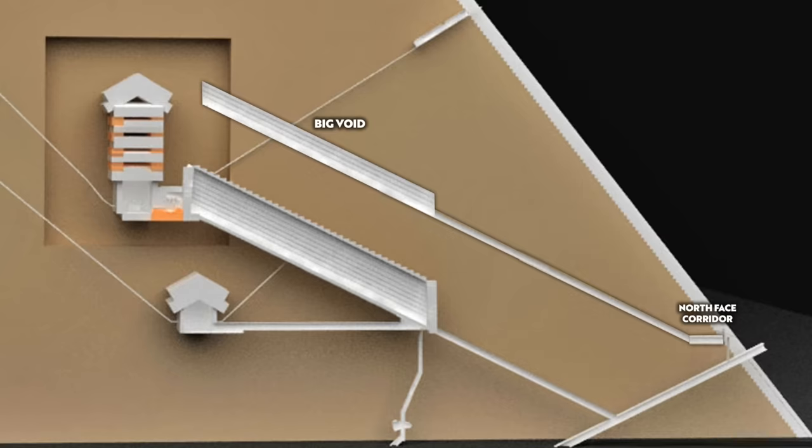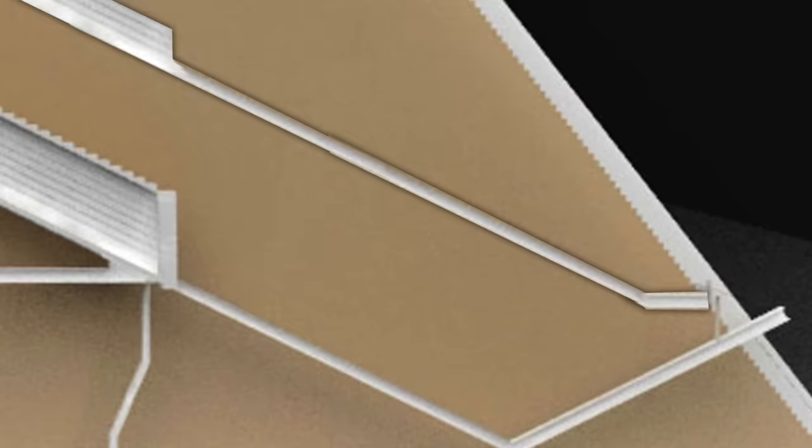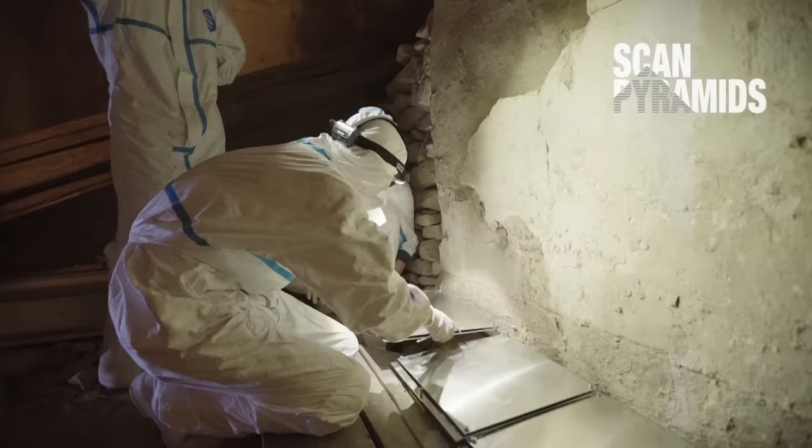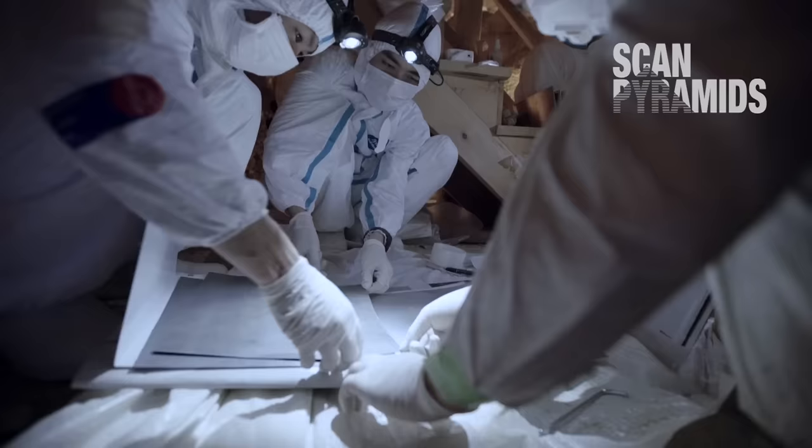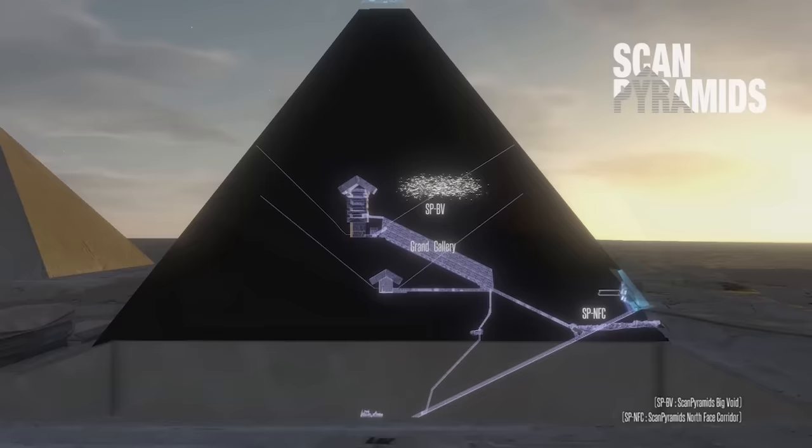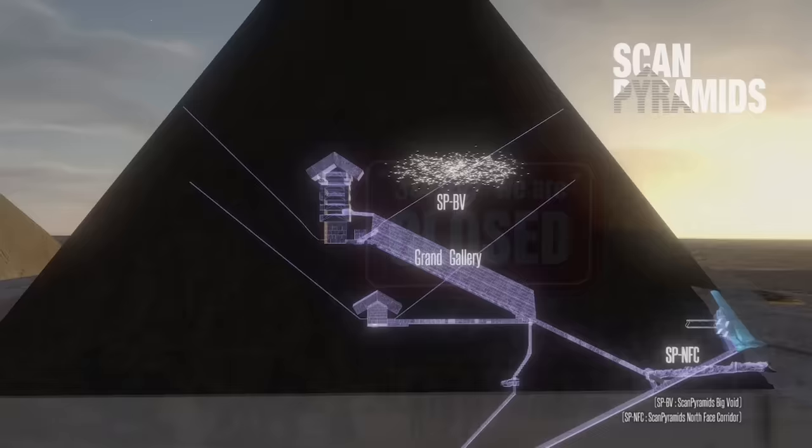The only way to find out more is for more Muon detectors to be placed in more public areas of the pyramid, such as the Ascending Passageway. This would tell us a lot more about if and how the big and small voids are connected, but this could only happen if the pyramid was closed to the public for around three months. And of course we could find nothing.